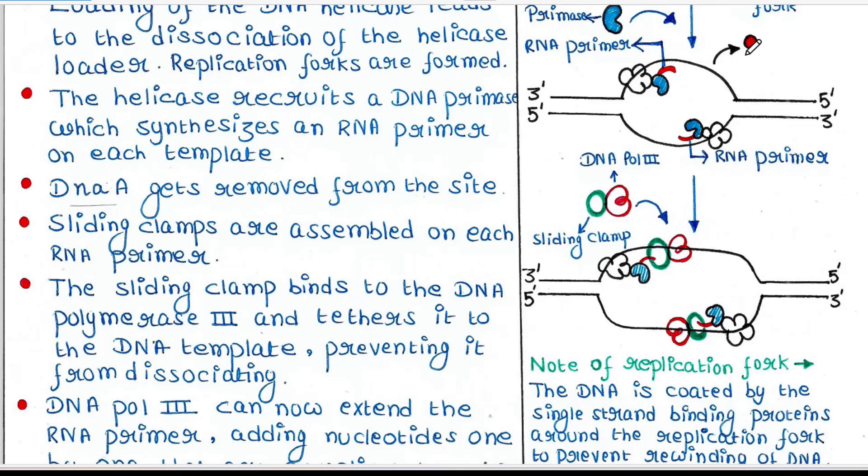Sliding clamps are assembled on each RNA primer. This is the sliding clamp. The sliding clamp binds to DNA polymerase 3 and tethers it to the DNA template, preventing it from dissociating.